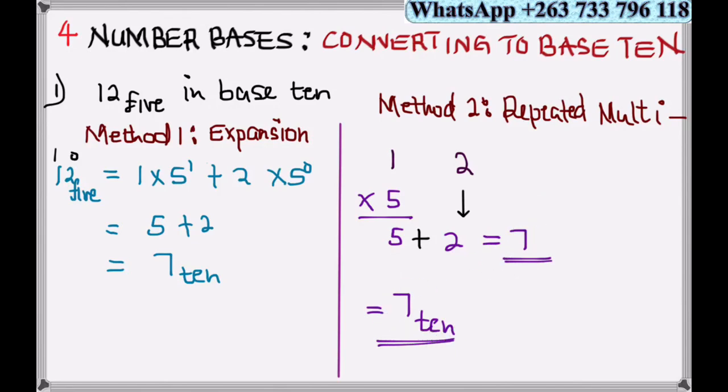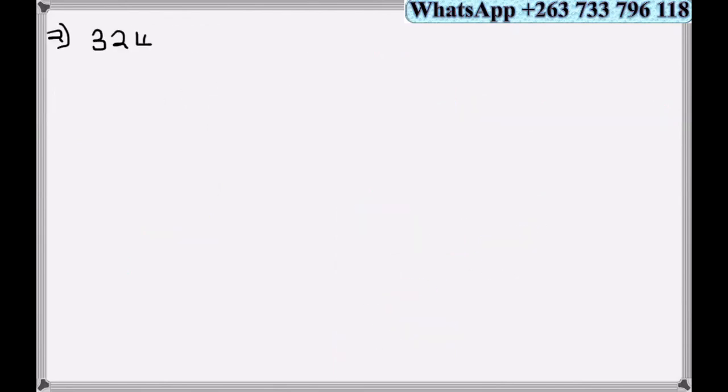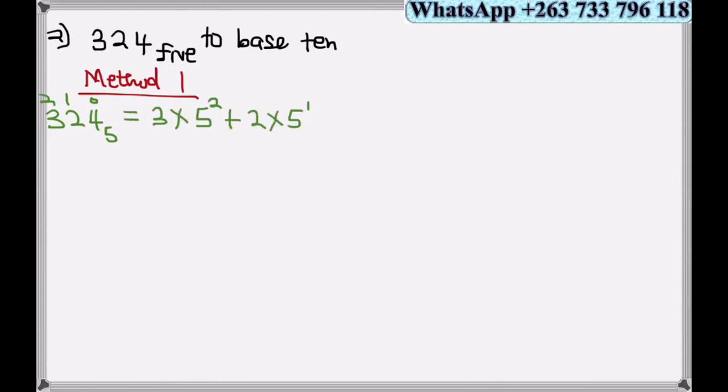Let's look at a second example: 324 base 5 to base 10. Method 1 expansion: these are my place values 0, 1, 2. Therefore, expand 3 times 5 squared plus 2 times 5 to power 1 plus 4 times 5 to power 0.